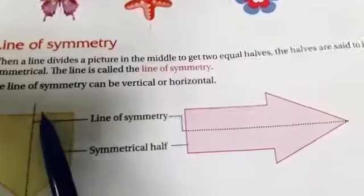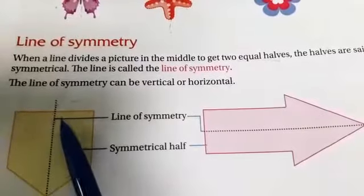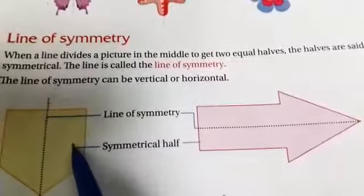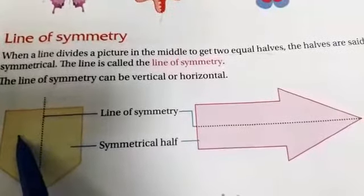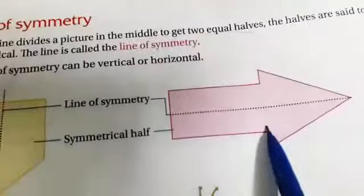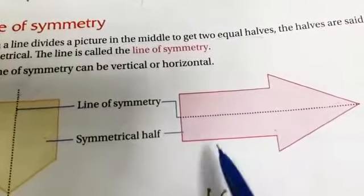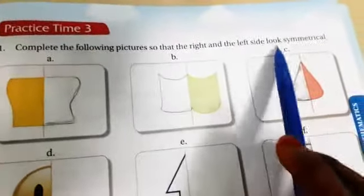That dotted line is the line of symmetry, and both halves come to symmetrical halves. Look at the exercise: complete the following pictures so that the right and left side looks symmetrical.